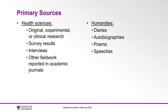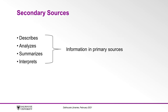In the humanities, a primary source may take the form of diaries, autobiographies, poems, or speeches, for a few examples. A secondary source describes, analyzes, summarizes, or interprets information contained in primary sources.